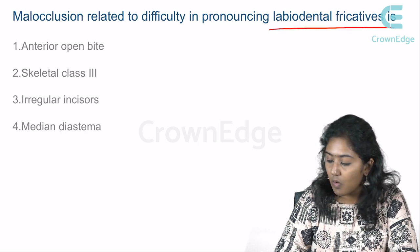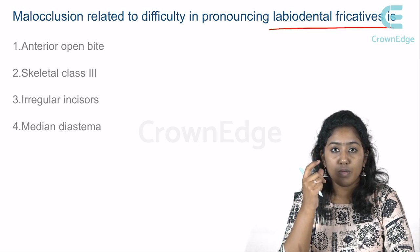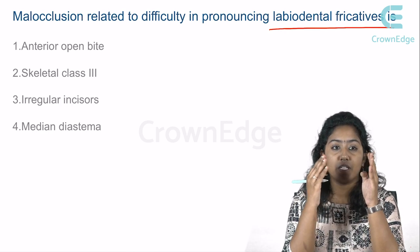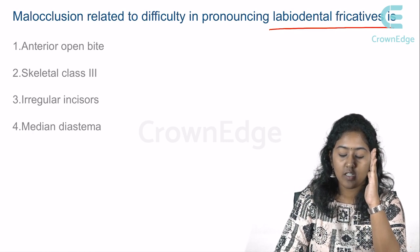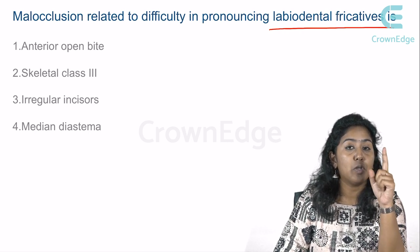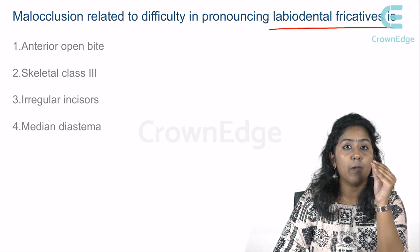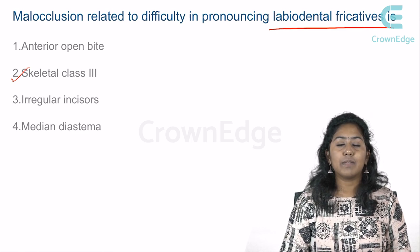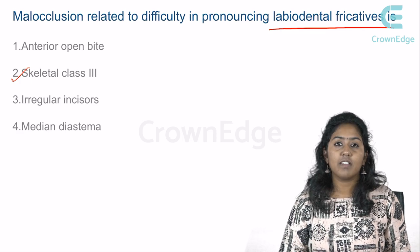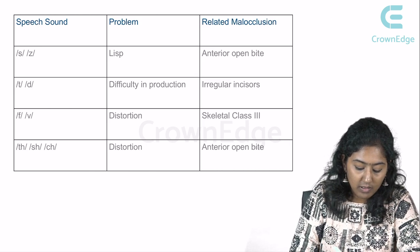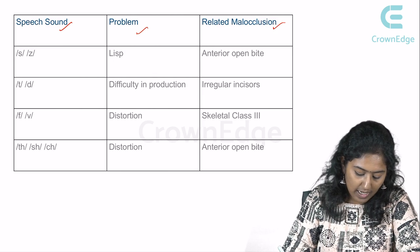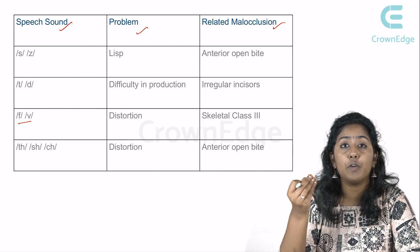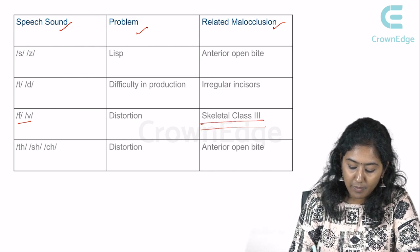A malocclusion related to difficulty producing labiodental fricative sounds — labio meaning lips, dental meaning teeth — involves coordination between the lips and teeth. Which malocclusion has a problem with labiodental coordination? It is skeletal Class 3 malocclusion. The speech sound 'F' and 'V' are produced using lips and teeth, and the related malocclusion is Class 3. Using such easy hints makes it easier to solve exam questions.